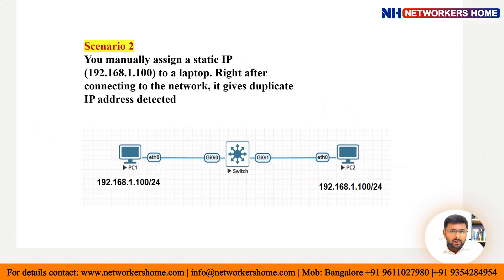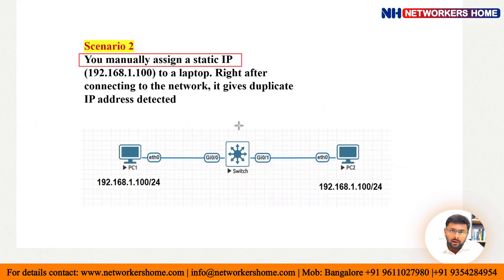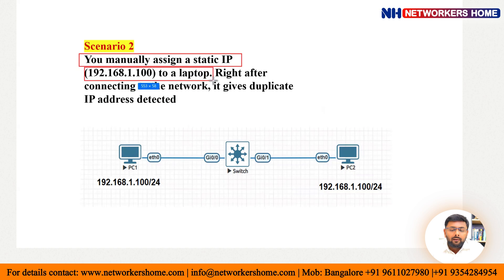That was Scenario 1. Let's go to Scenario 2. This tells that you have manually assigned a static IP. There are two ways to get an IP to end devices: one is static — manually going and configuring IP addresses on individual devices — and the other option is DHCP (Dynamic Host Configuration Protocol). In this scenario, you have manually assigned a static IP of 192.168.1.100 to an end device or laptop.